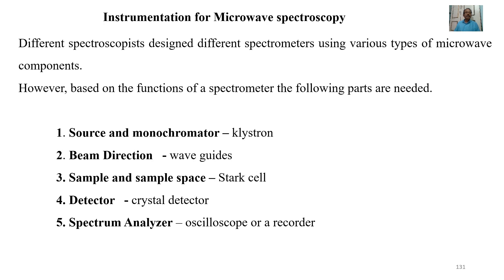In this video lecture, we shall learn instrumentation for microwave spectroscopy. A microwave spectrometer is a scientific instrument that uses microwave radiation to detect and measure the absorption of different frequencies, allowing for the analysis of molecular structure and composition. Stark modulation has been widely used at microwave frequencies, while source modulation is the most common technique for millimeter and submillimeter spectroscopy.